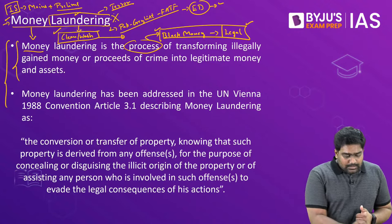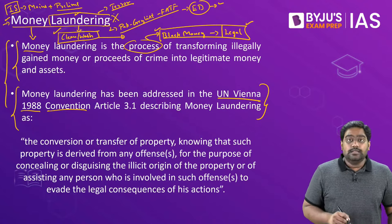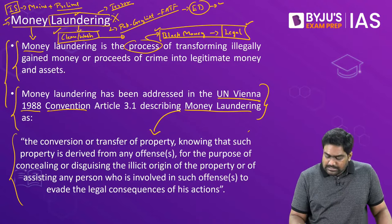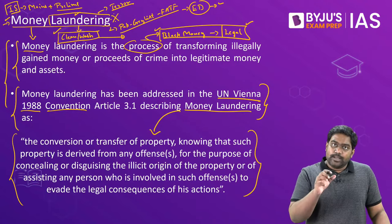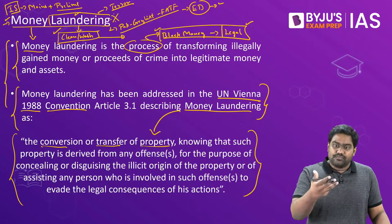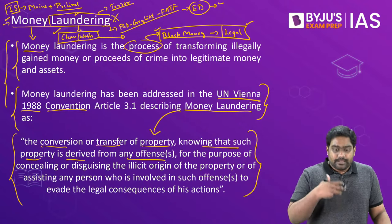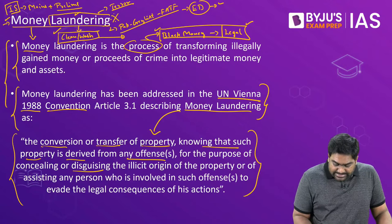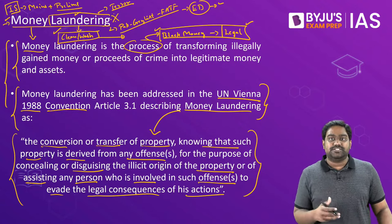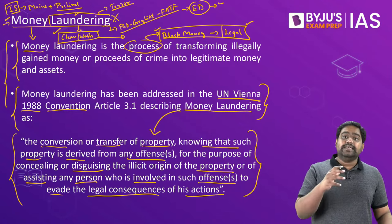There is a UN convention called the Vienna Convention of 1988 that provides a definition of money laundering as well. It states that any conversion or transfer of property or wealth, despite knowing that this wealth is derived from illegal activities, and if it is disguised and converted into legal wealth in order to evade legal consequences, then this whole process of transforming black money into white money is known as money laundering.